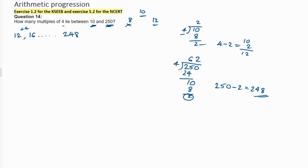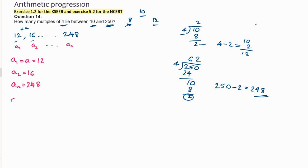So we find the first term and the last term — that is very important. The second term is not critical because multiples of 4 obviously give d = 4. We write the AP: 12, 16, ..., 248. So a1 = 12, a2 = 16, and an = 248. The d value is a2 − a1 = 16 − 12 = 4.